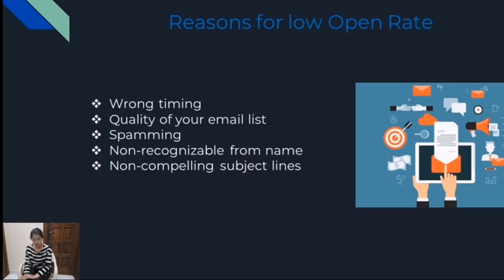There is another reason: a non-recognizable from name. There are many brands I have seen in Mailchimp where the from name has been changed. When you set up your campaign, you have an option of adding your business name in the from field. Many brands have experimented and changed it, which is highly not recommended because then your credibility suffers. The subscriber gets confused about which brand the email is from. So try to stick to one recognizable name that represents your brand. Besides, the biggest reason for a low open rate is non-compelling subject lines — the subject line is not interesting enough that people open it.